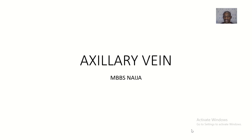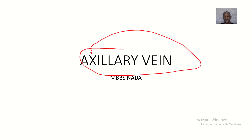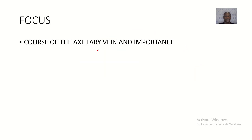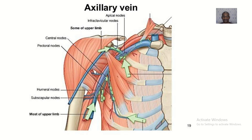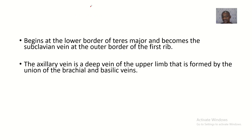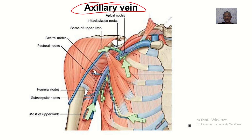A quick one — we'll be talking about the axillary vein: where it starts, where it ends, and its course. The axillary vein begins at the lower border of teres major and becomes the subclavian vein at the outer border of the first rib.